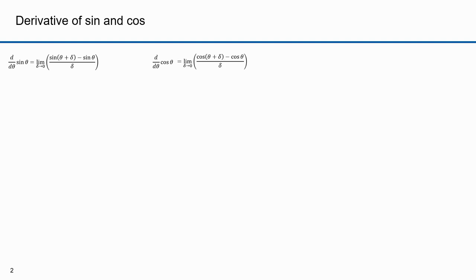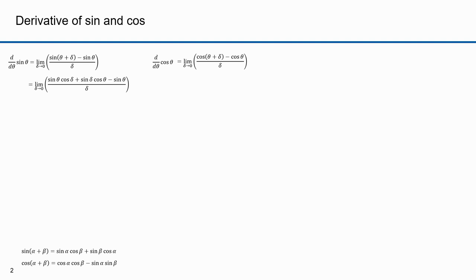For the cosine I'm going to take the limit as delta approaches zero of cosine of theta plus delta minus cosine theta over delta. In an earlier part I derived the trigonometric identity for the sine of the sum of two angles: sine of alpha plus beta equals sine alpha times cosine beta plus sine beta times cosine alpha. Likewise the cosine of alpha plus beta is cosine alpha times cosine beta minus sine alpha times sine beta. So I can expand both sine of theta plus delta and cosine of theta plus delta with those identities.